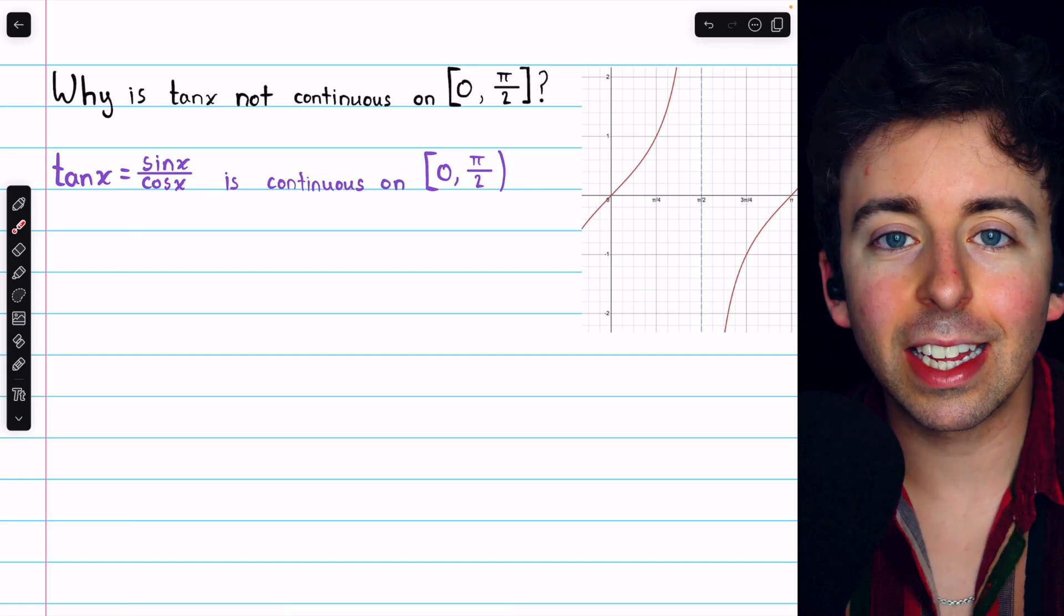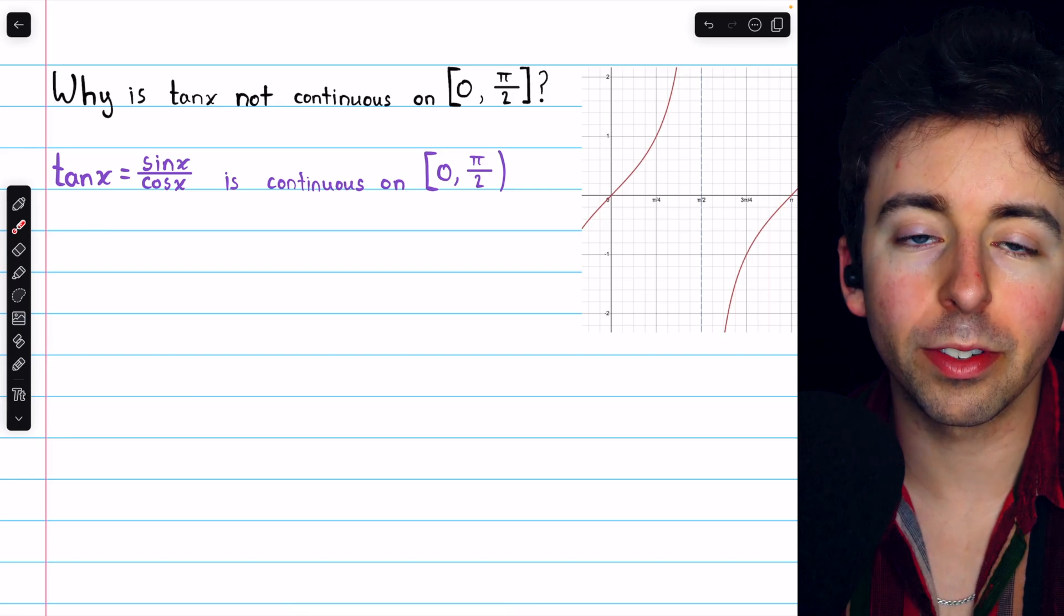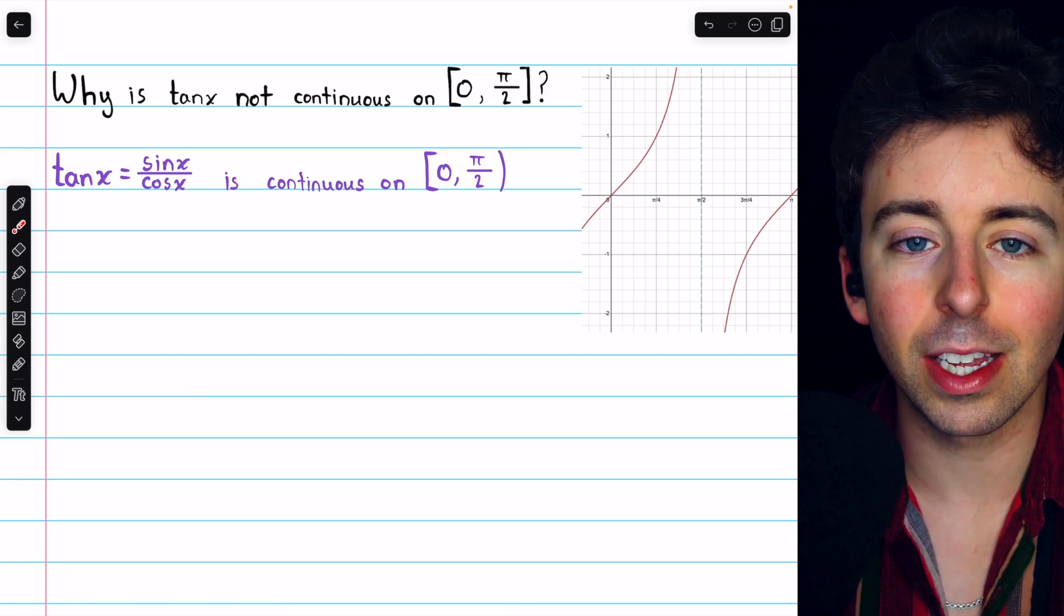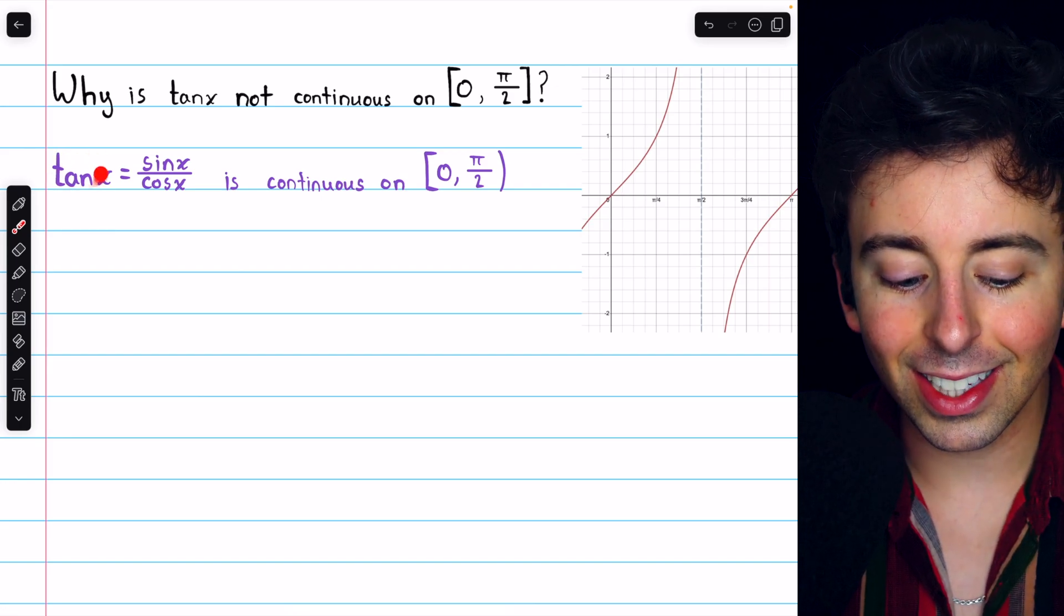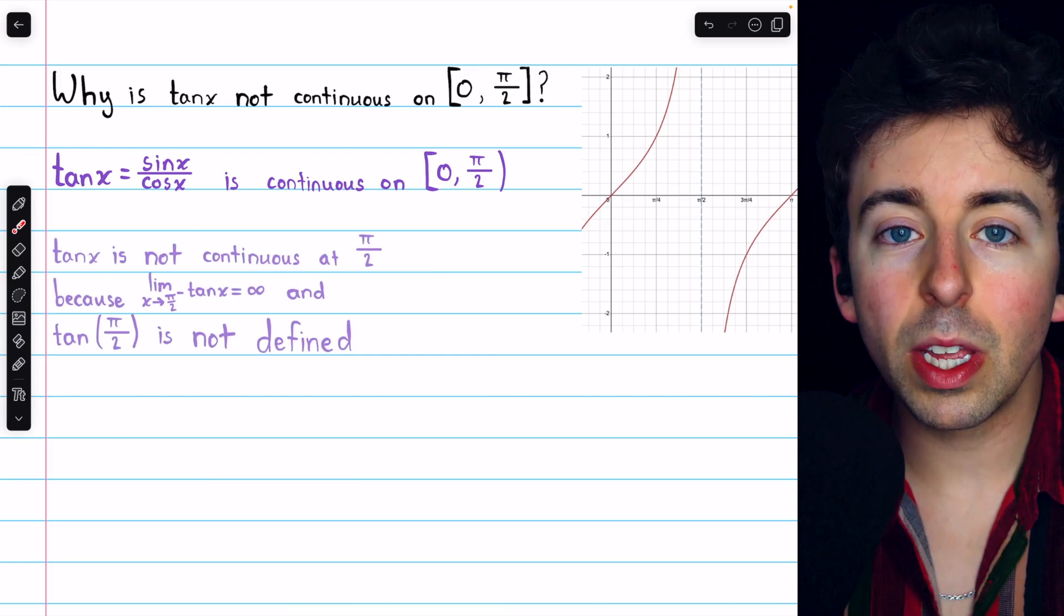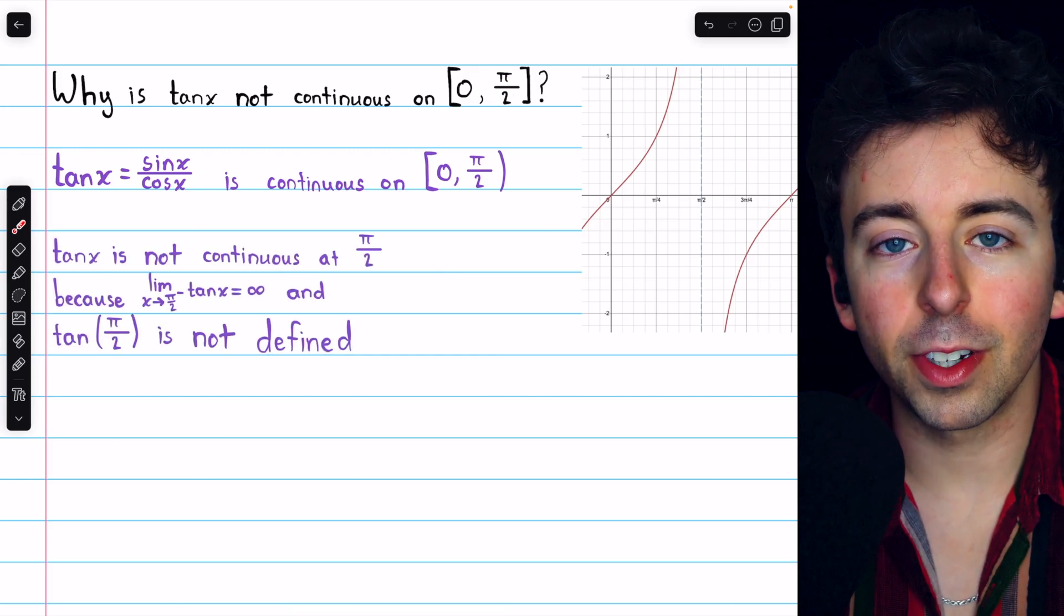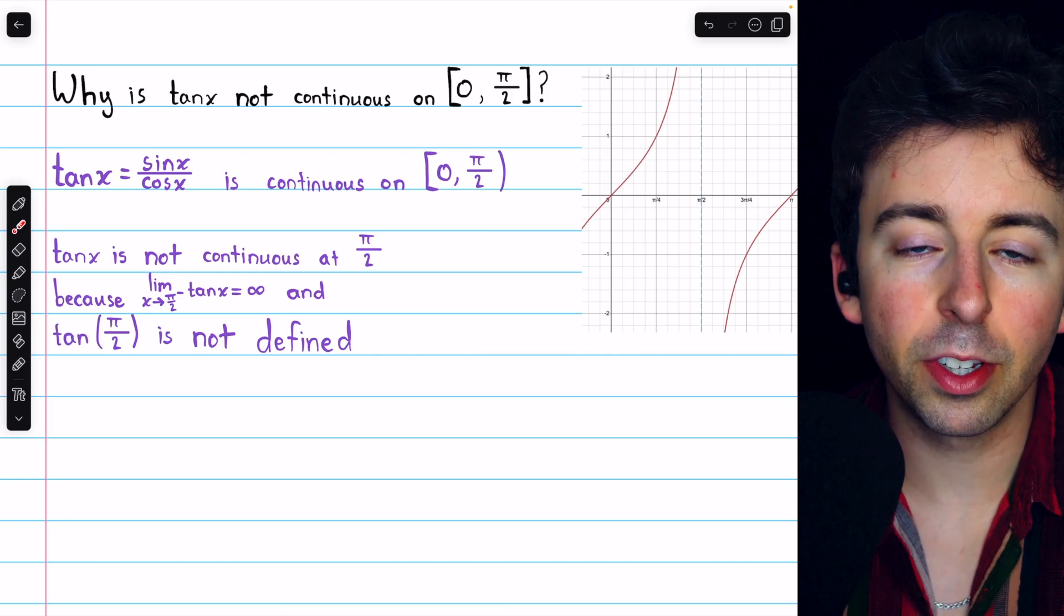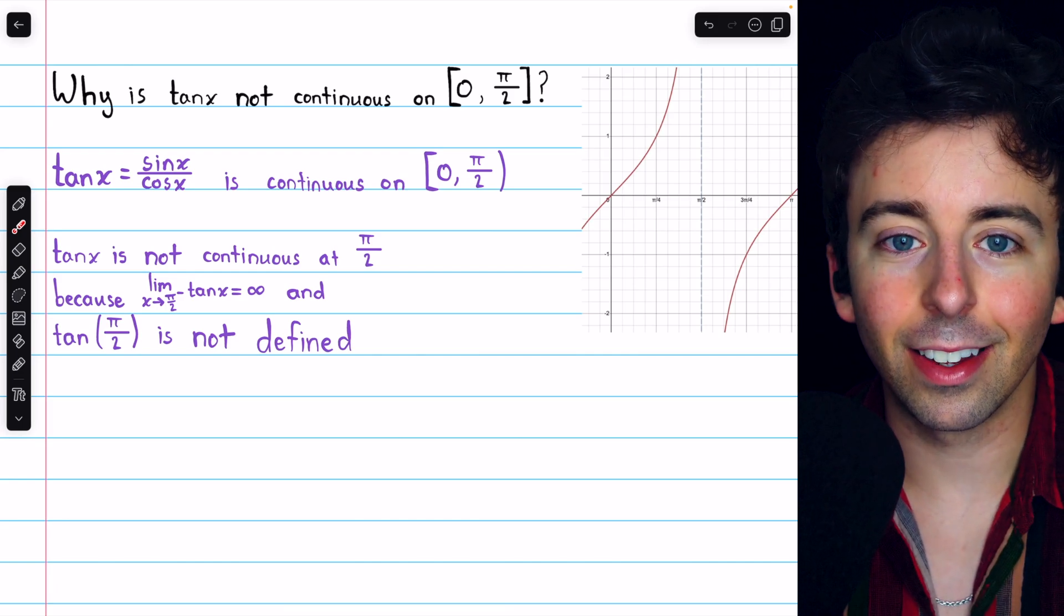Even restricting it to that one direction though, we still have a problem with continuity, which is that the tangent function is not defined at pi over 2. So we have two things that would be required for tan x to be continuous at pi over 2, and neither one of those things is satisfied.